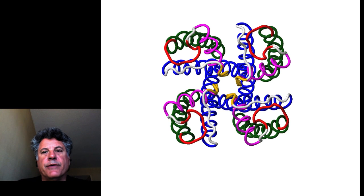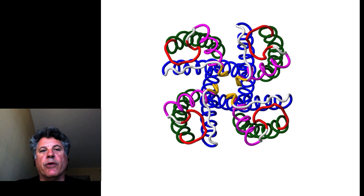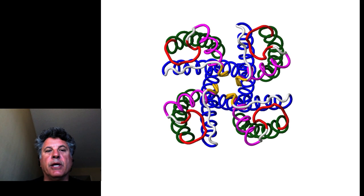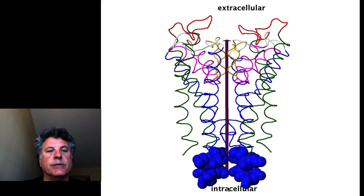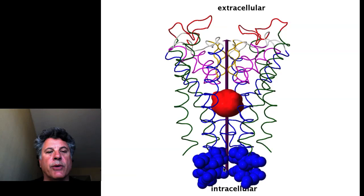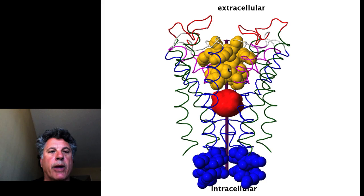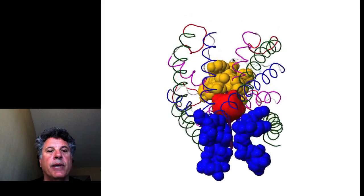We can now turn to features of this channel that provide for the selectivity of potassium ions over other positively charged ions, like sodium. In this treatment, flow is going to be visualized as going up from the intracellular side to the extracellular side of the membrane, where the transmembrane-spanning helices are. The intracellular entryway is shown in blue, a large cavity is shown in red, and the extracellular entryway — or exitway if flow is going up — is shown in yellow.